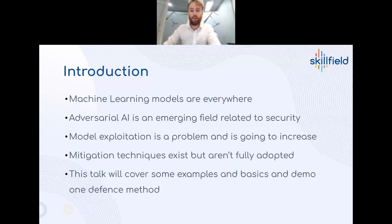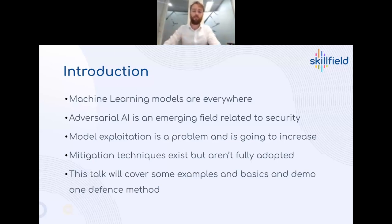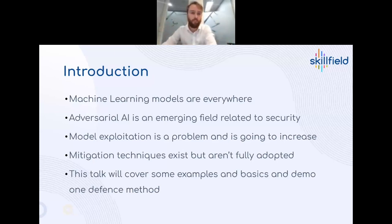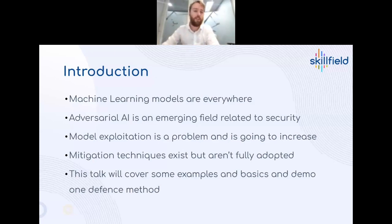That model exploitation problem is what we're going to look at today — how people build models, and how accuracy isn't the only important metric in model quality. There are robustness metrics that people need to track and improve to make sure what they're building is robust, fit for purpose, and can't be easily exploited. As more companies use AI, the attack surface for these threats will increase.